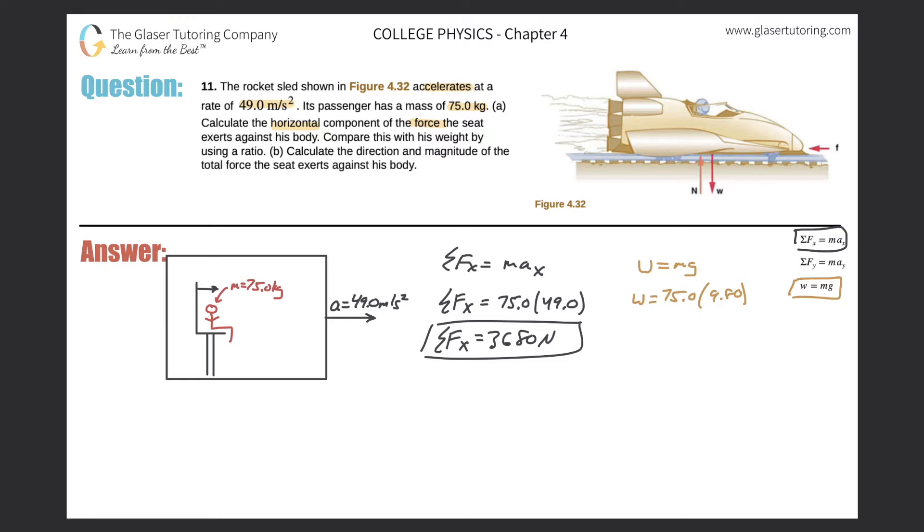But not negative because we're not considering its acceleration. We're using g. So the weight here is simply going to be 75 times 9.8. And we get a value of 735. So this is 735 newtons.